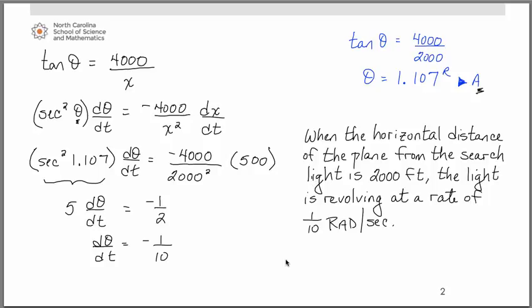So for our final answer and conclusion, we would have that when the horizontal distance of the plane from the searchlight is 2000 feet, the light is revolving at a rate of one tenth radians per second.